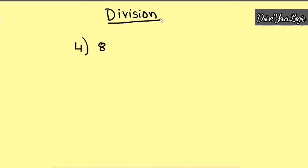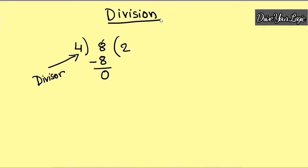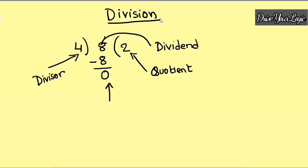First of all, you are dividing 8 by 4, and you're getting 4 into 2 is 8, and the remainder is 0. So here, this 4 is called the divisor. This 8 is called the dividend. This 2 is called the quotient, and this 0 is called the remainder.